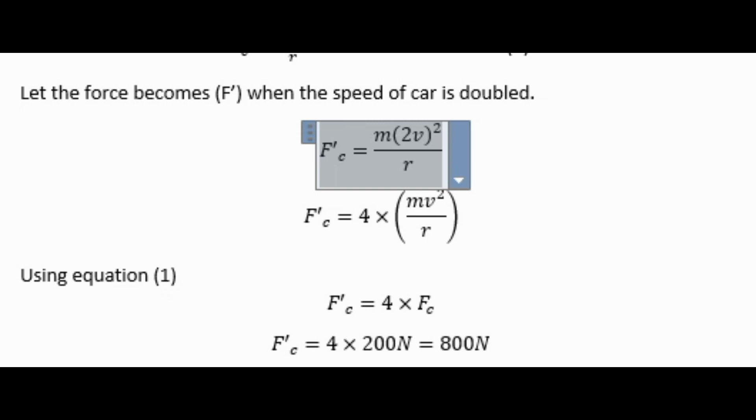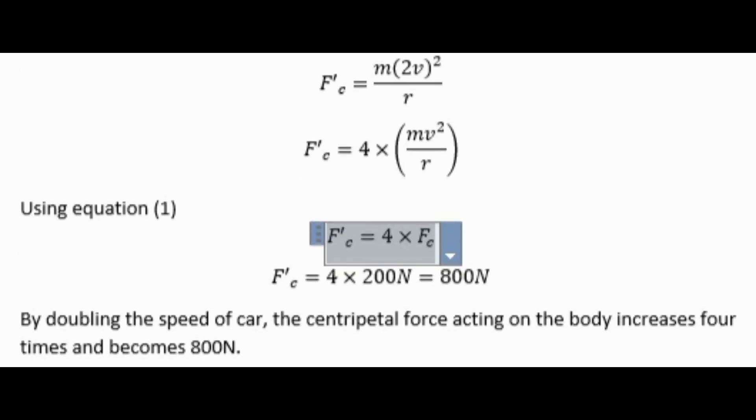F'_c = m(2v)²/r. F'_c = 4 × (mv²/r). Using equation one, F'_c = 4 × F_c.